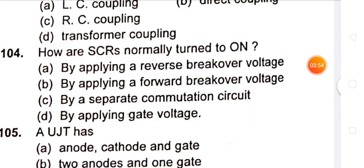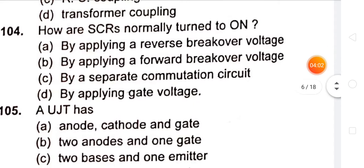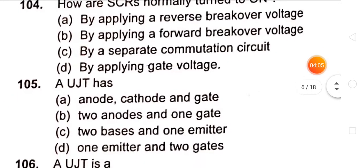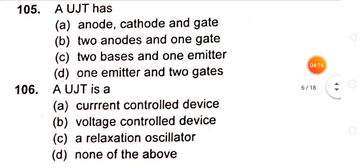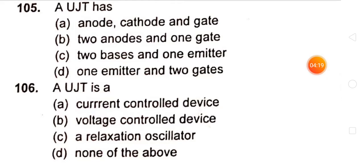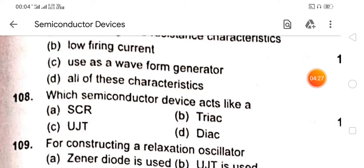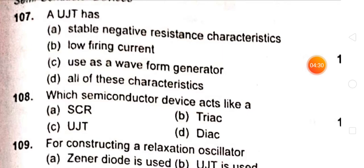SCRs normally turn on by applying gate voltage. A UJT has two bases and one emitter. UJT is a voltage controlled device. UJT has stable negative resistance characteristics.